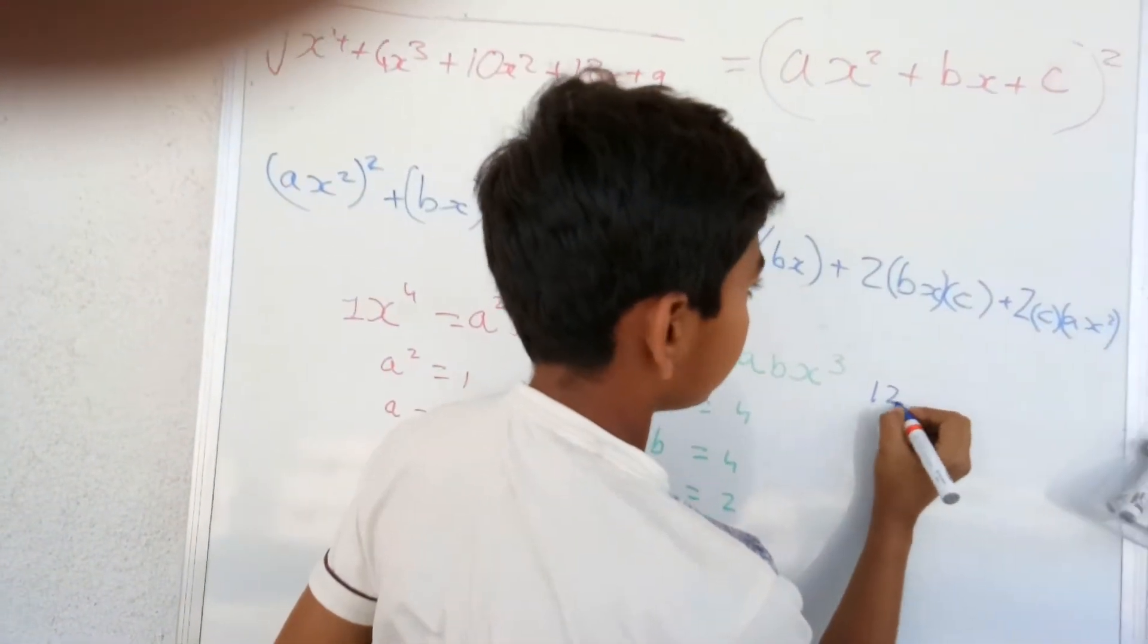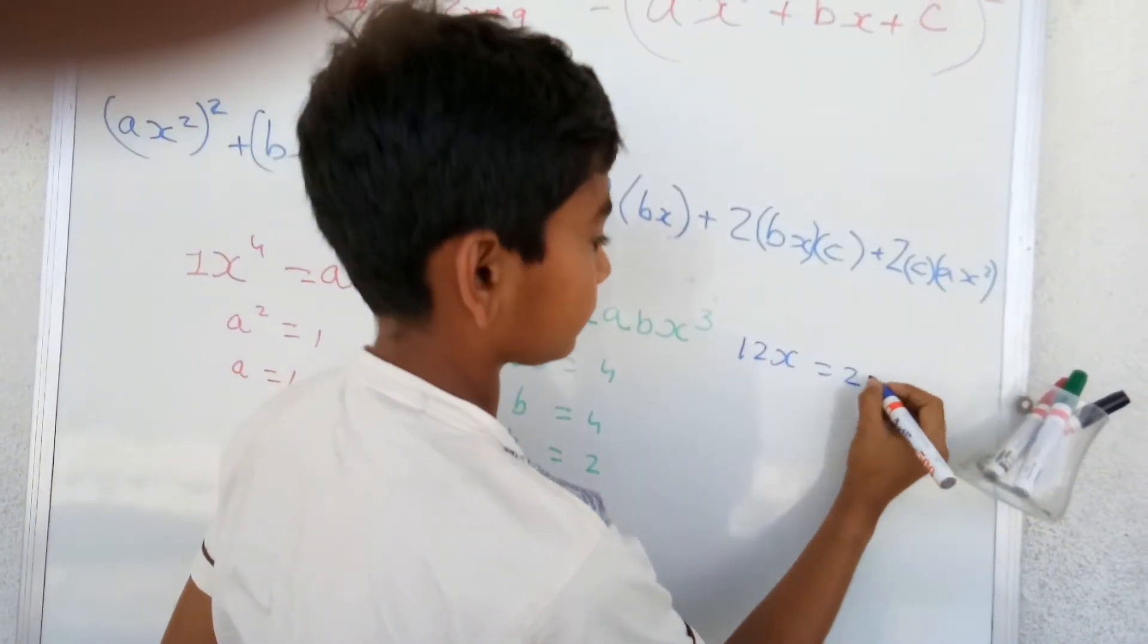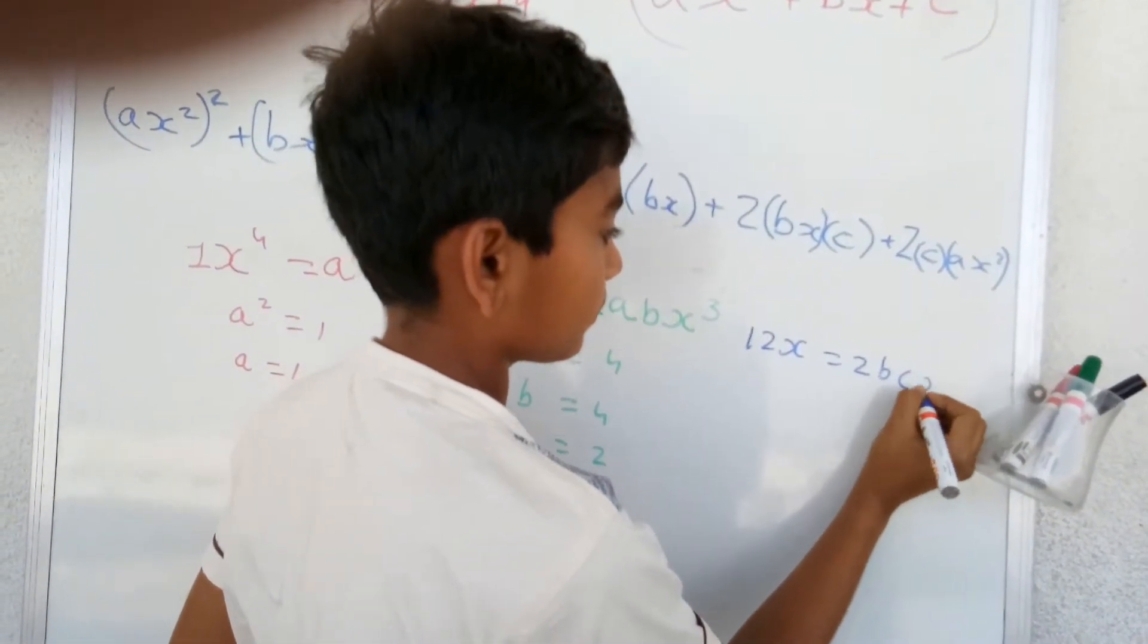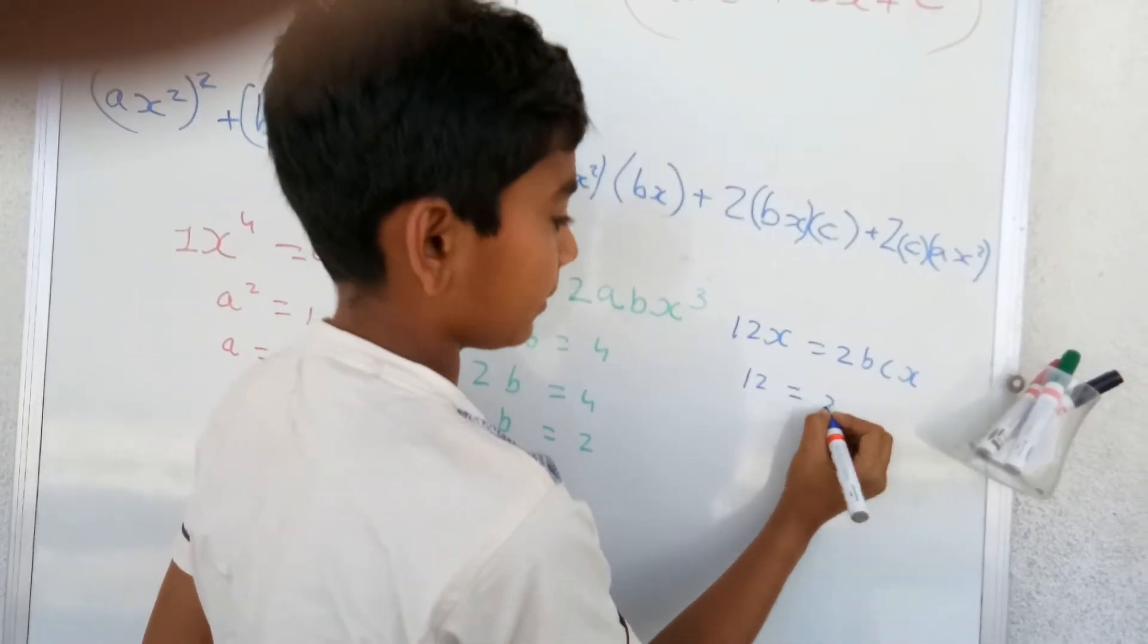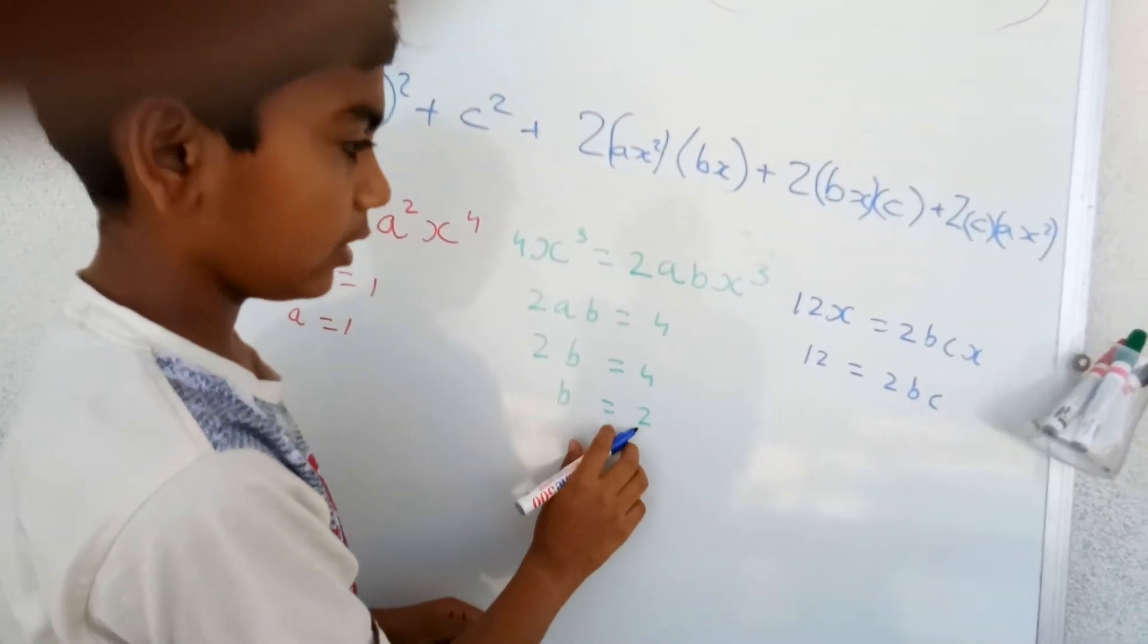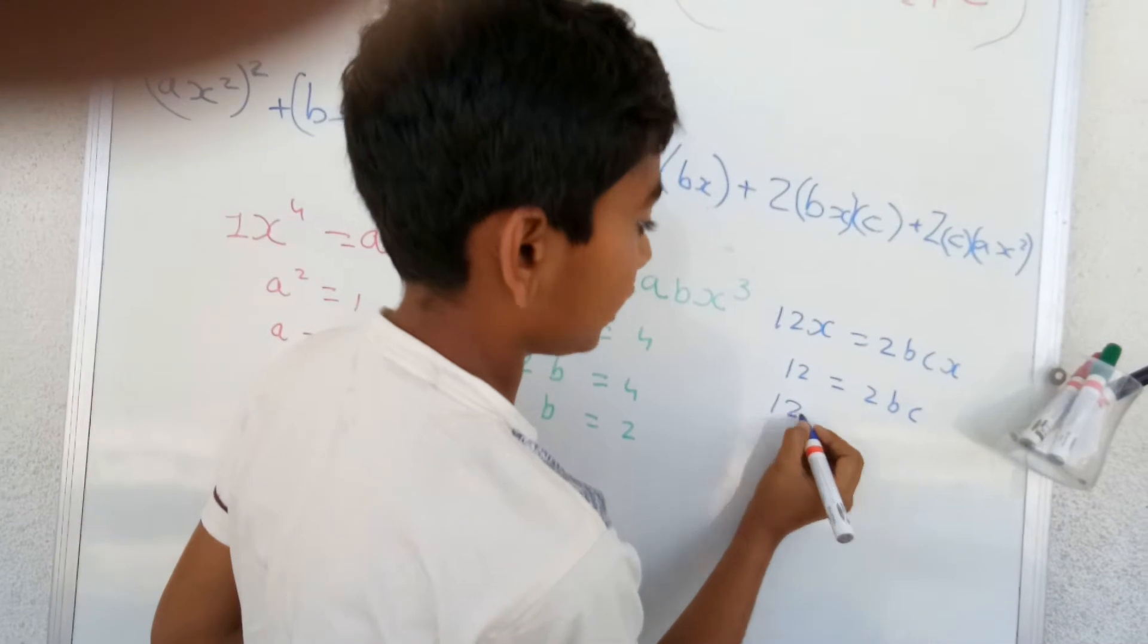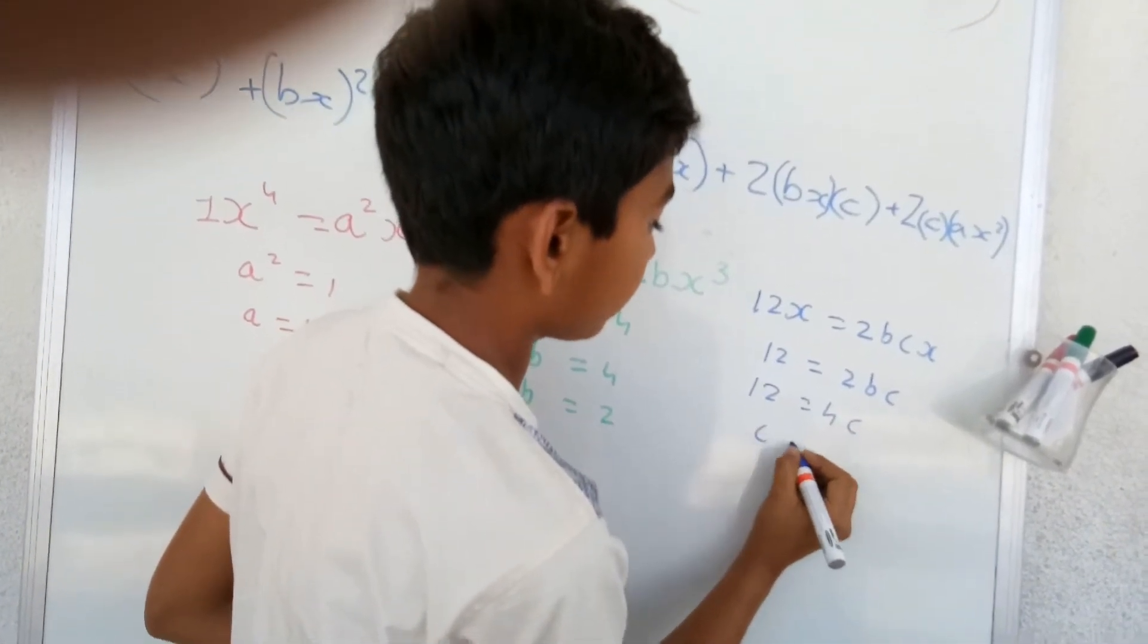So, 12x is equal to 2bcx. Therefore, c equals to 3.